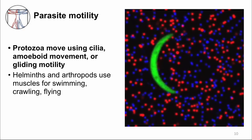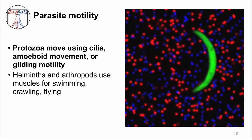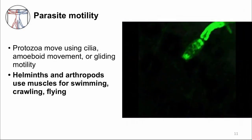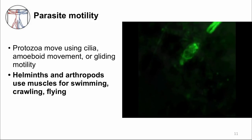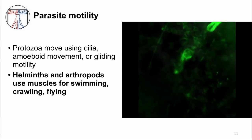Helminths and arthropods use muscles to move. Here you can see a free-swimming schistosome cercaria trying to penetrate the skin. It first uses its tail to reach the skin and then loses it as it penetrates the epidermis. It then crawls into deeper tissues. Eventually, it will travel through the body and establish an infection in the liver.